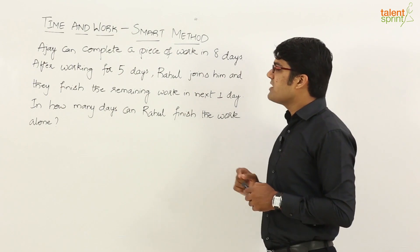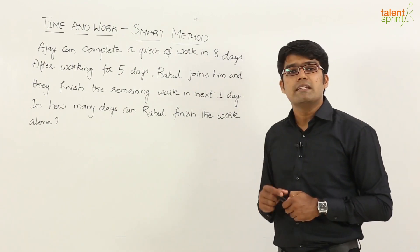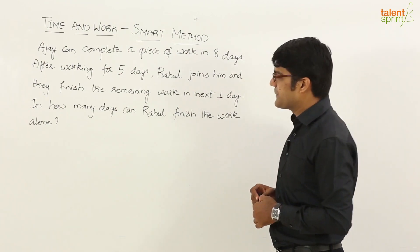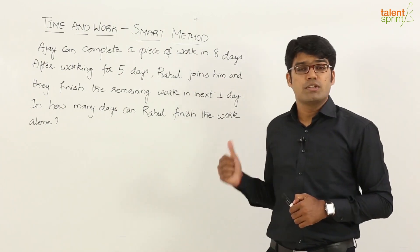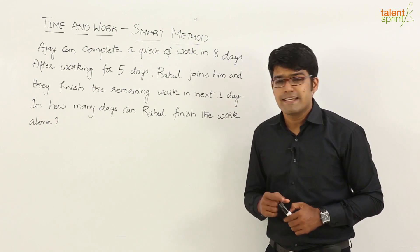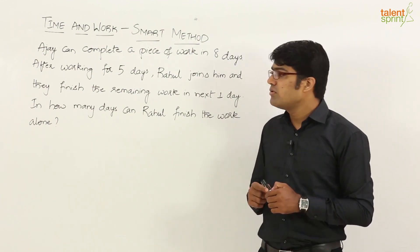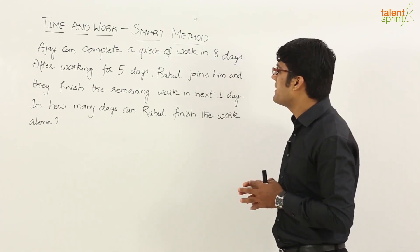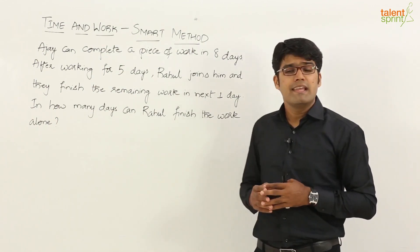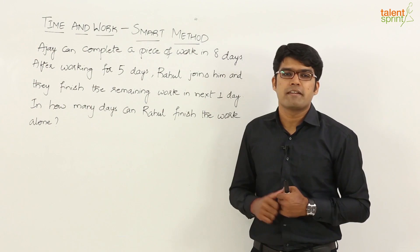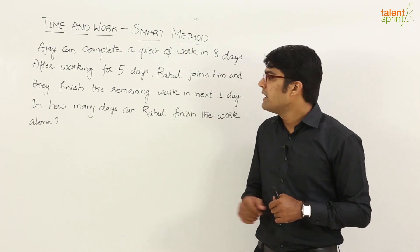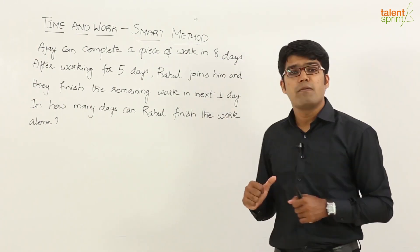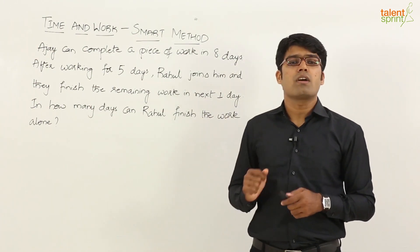The question is: Ajay can complete a piece of work in eight days. After working for five days, Rahul joins him and they finish the remaining work in the next one day. In how many days can Rahul finish the work alone?